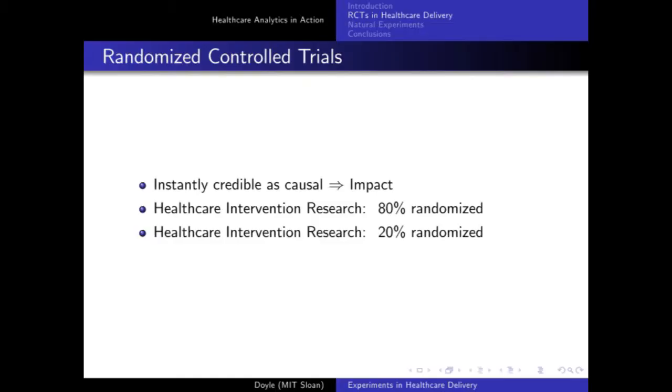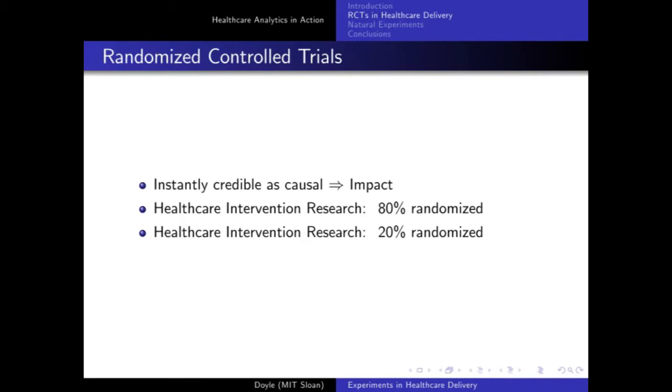In healthcare intervention research — like pharma or medical devices — 80% of published research is randomized. They've been doing it a long time. But in healthcare delivery research, where we're trying to figure out how to deliver care differently, only 20% is randomized. That's what I'm making a big push on — working with providers to roll out healthcare delivery reforms in a random way so we can rigorously test what works.